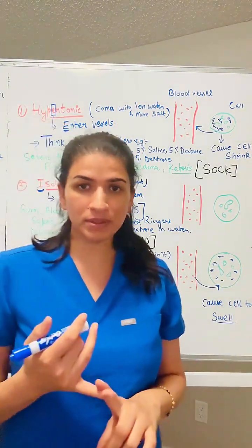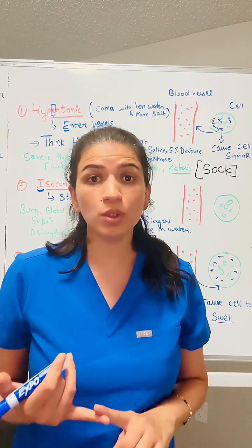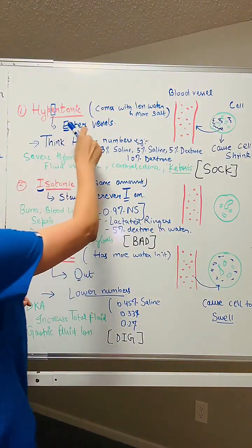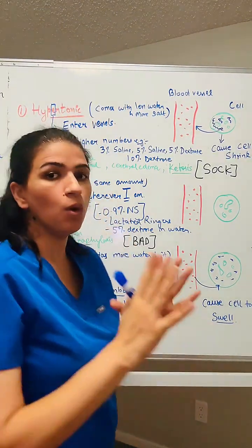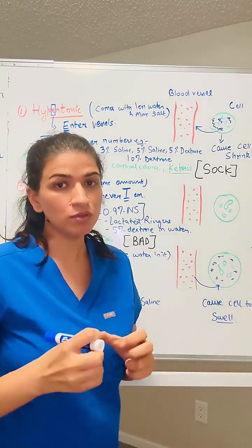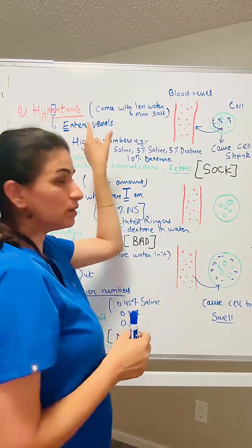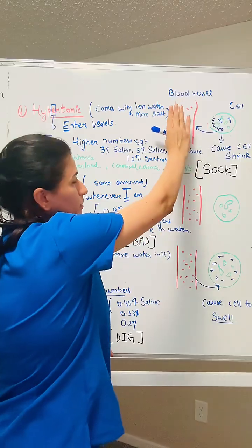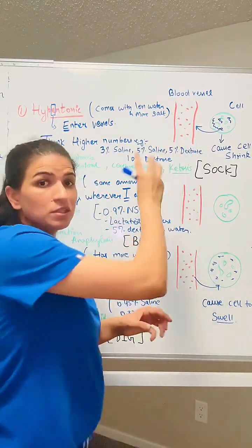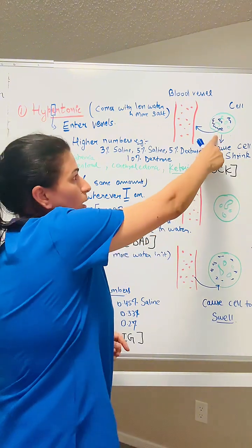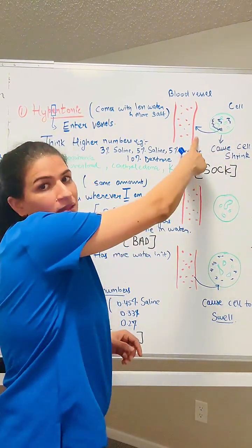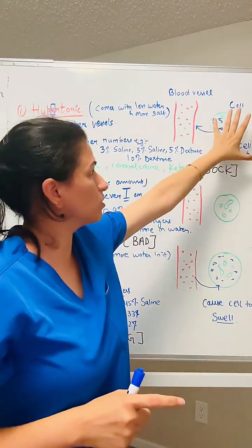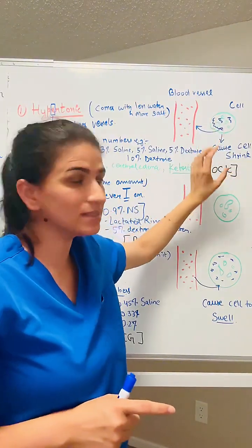We have three different types of IV fluids: hypertonic, isotonic, and hypotonic. In a hypertonic solution, the solution comes with more salt and less water. When you give this hypertonic solution to a patient, there is a lot of salt, and because of that extra salt, water will come out from the cells and go into the blood vessels.